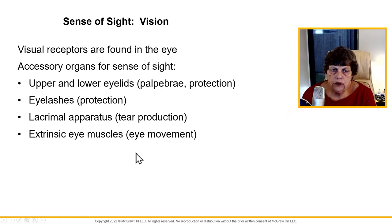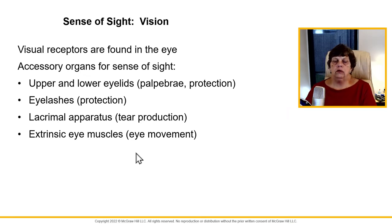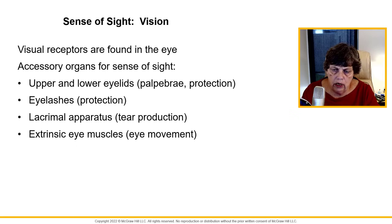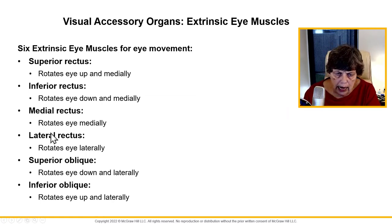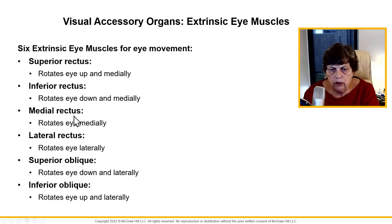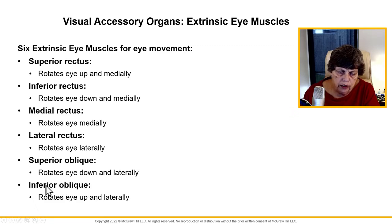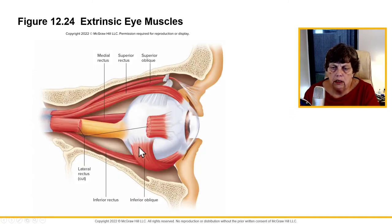Moving on to vision — the visual receptors are found in the eye. You have accessory organs: the upper and lower eyelids, eyelashes, the lacrimal apparatus for making tears, and the eye muscles for movement. There are six eye muscles — the rectus muscles: superior, inferior, medial, and lateral — and the obliques: superior and inferior, which rotate the eye down and laterally, and up and laterally.